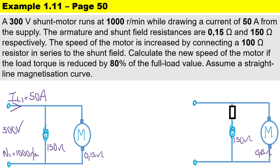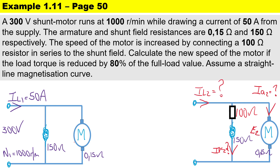Fully label your circuit diagram. The motor is drawing a supply current of 50 amperes, the terminal voltage is 300 volts, the original speed is 1000 revs per minute, the shunt winding is 150 ohms, and the armature resistance is 0.15 ohms. The diverter resistor of 100 ohms is placed in series with the shunt field winding. We need to calculate the secondary armature current, the secondary EMF, and the secondary field current.